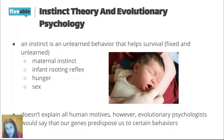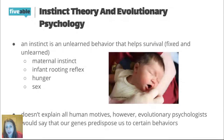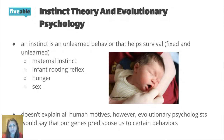The downfall of instinct theory is that it doesn't explain everything we do — like why I work hard at my job or why I like to play sports. So it's not a complete picture. Evolutionary psychologists would say our genes predispose us to certain behaviors, like being a competitive person, which relates to evolution and instinct. But again, not a whole picture.